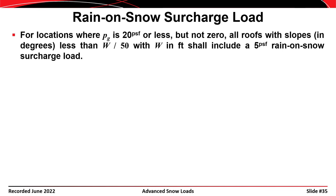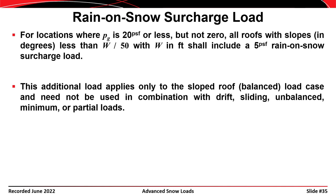Finally, in some cases we deal with the possibility of a snowstorm followed by rain — referred to as rain on snow surcharge. If snow falls and then the temperature increases and it rains, the water that would normally drain off a roof is sometimes absorbed or trapped by the snow, leading to a higher load than from either rain or snow acting alone. For locations where the ground snow load is 20 pounds per square foot or less but not zero, all roofs with slopes less than W over 50 shall include a five pounds per square foot rain on snow surcharge load. This additional load only applies to the sloped roof balanced load case and need not be used in combination with drifts, sliding snow, unbalanced loads, minimum loads, or partial loads.